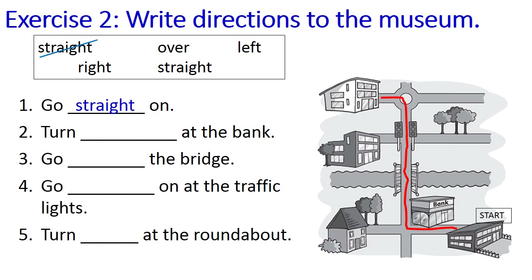It's your time now. Take out your paper again. Look at the map and write directions to the museum. Use the words in the box to complete the sentences. Example number one: Go straight on. You continue with number two, number three, four, five. You have three minutes for this exercise.